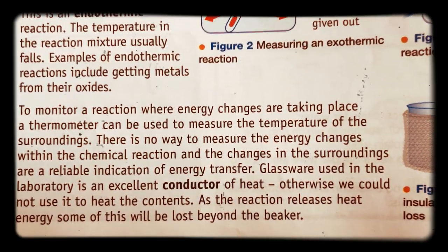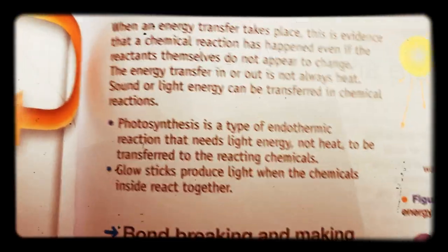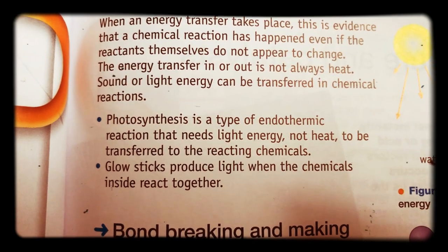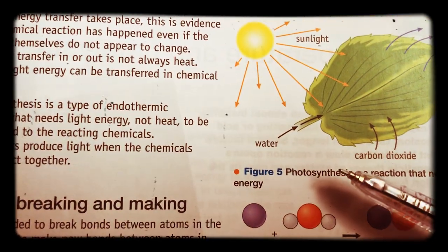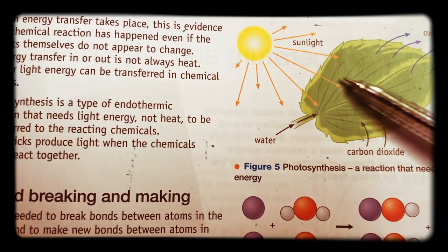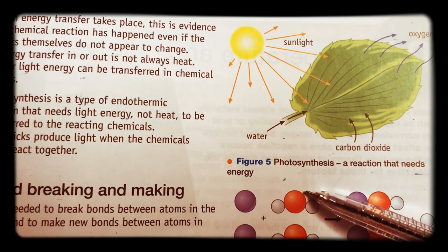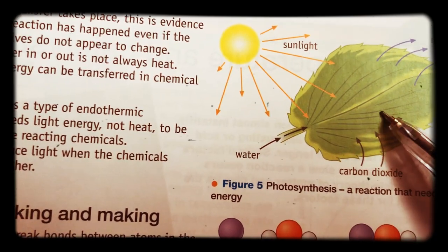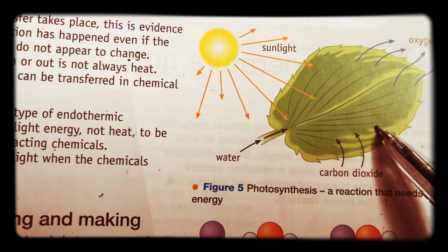It's very important to also know that some chemical reactions don't just involve heat energy transfer but also light energy transfer. Photosynthesis, for example, is a very good example of light being supplied to cause a chemical reaction to take place. We've studied photosynthesis — do you think it's an exothermic or an endothermic reaction based on what we've studied? Pause the video and think about it.